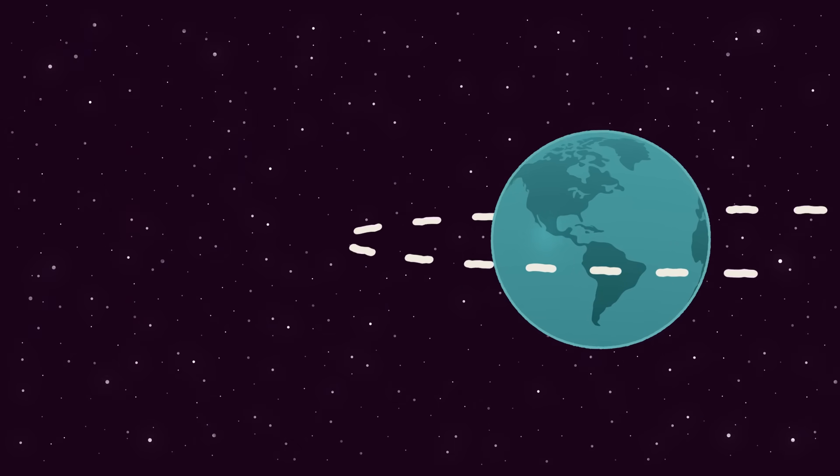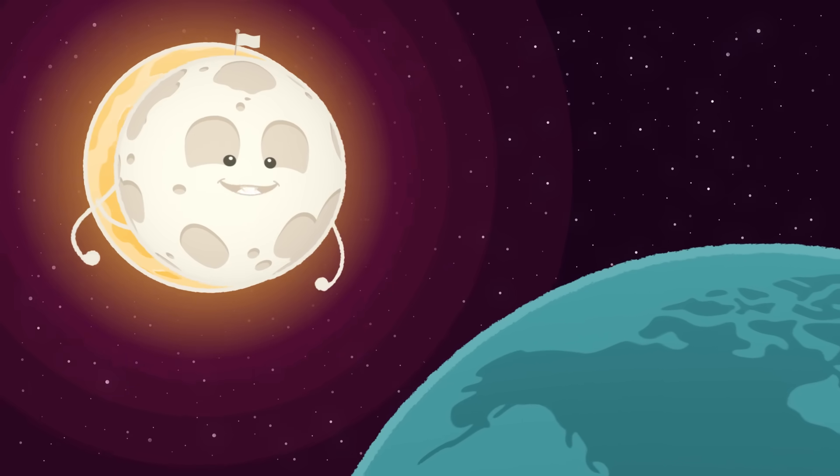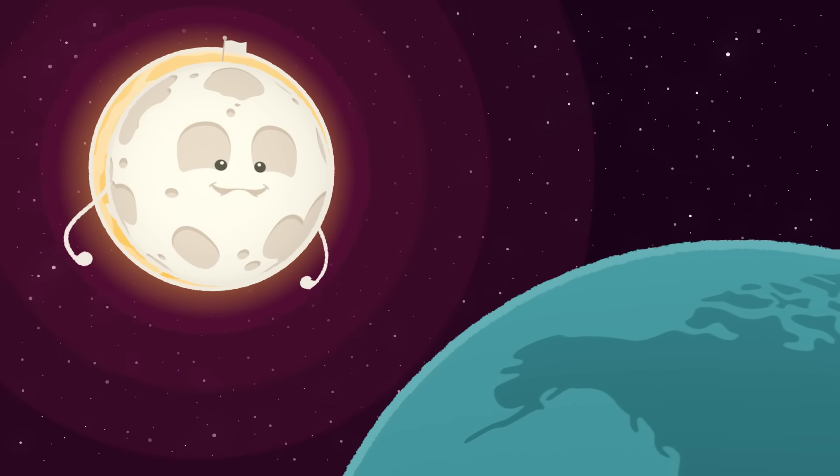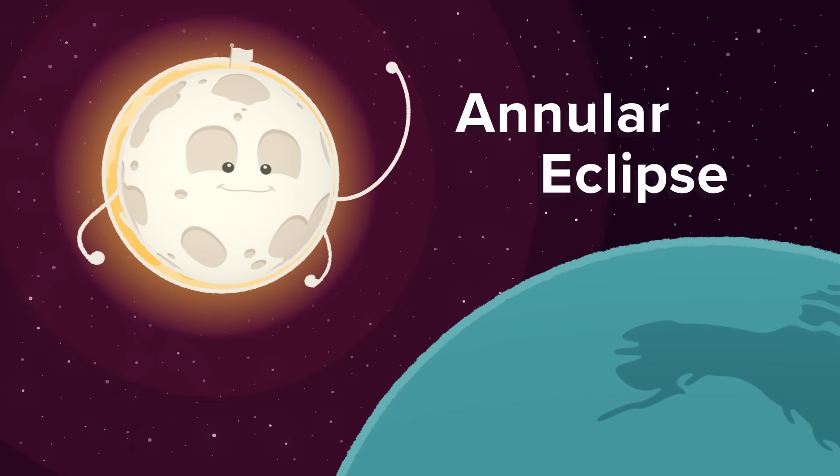Here, I'll show you. If I am farther from Earth when I pass Sun, I am going to appear smaller, so I won't cover up all of Sun's light. That's called an annular eclipse.